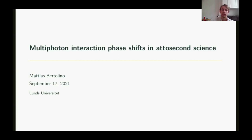It is known from perturbation theory that you acquire a minus i for each new order, and some time has passed since Feynman started counting his vertices. These minus i have somehow been overlooked, likely due to the success of RABBIT. In RABBIT, both interferometric pathways share the same number of interactions with the probe field. But this is not the general case, and in particular not for some of the more recent experiments.